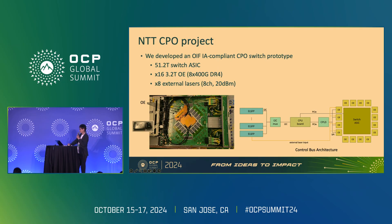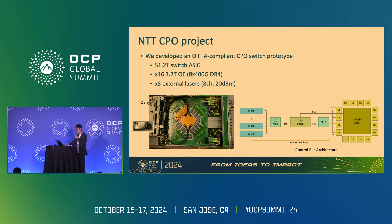At NTT, we are also developing CPO switches. As a prototype, we built a switch conforming to OIF specification. This switch features a 50T switch ASIC and 16 optical engines, and it also has eight external lasers, each with eight channels and 20 dBm output power. On the right, you can see the control bus architecture: optical engines are placed around the switch ASIC and connected to the CPLD on the motherboard via SPI. The CPLD is connected to the CPU via PCIe, and optical engines are controlled by the NOS from the CPU. The ELSFP is also controlled and connected to the CPU via I2C.